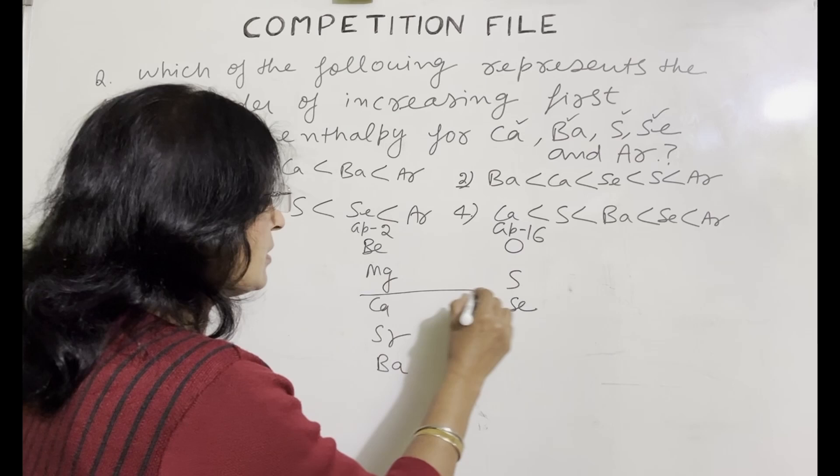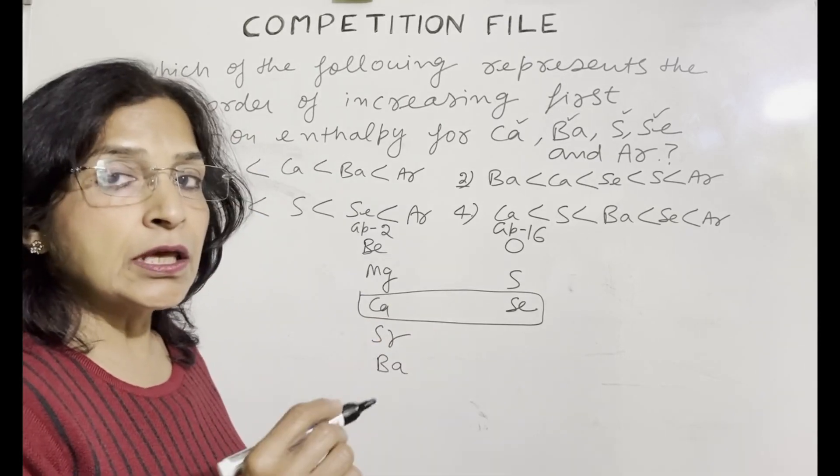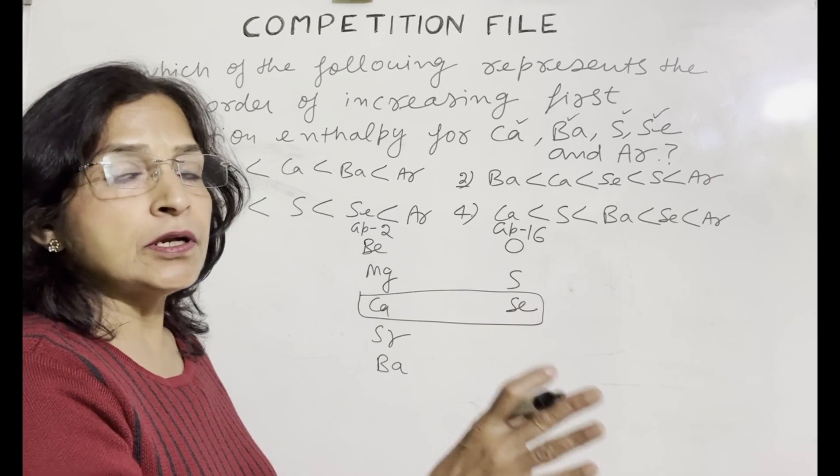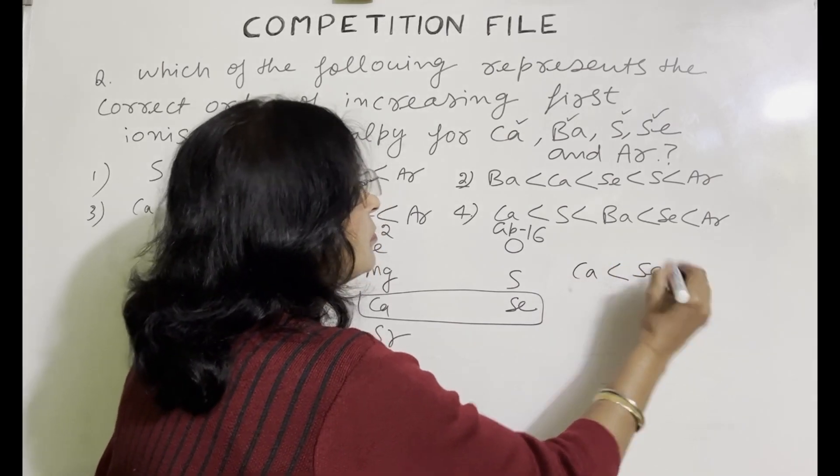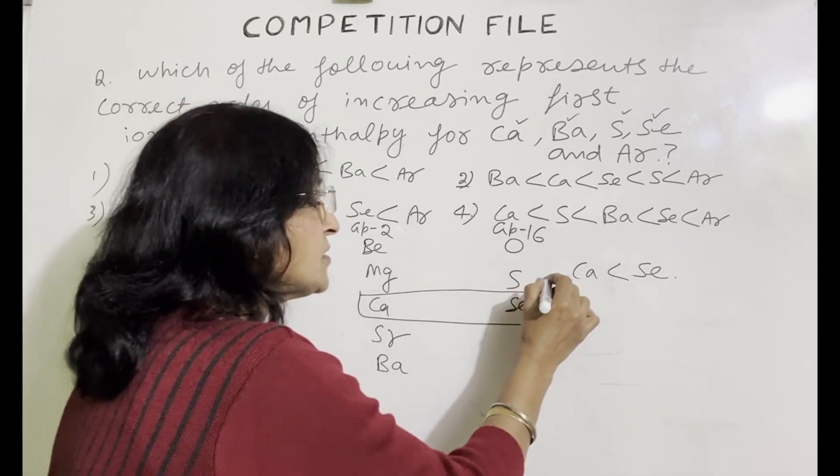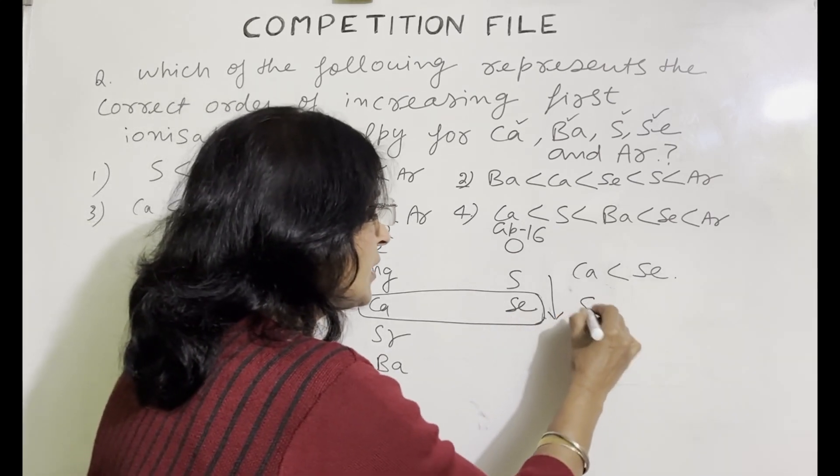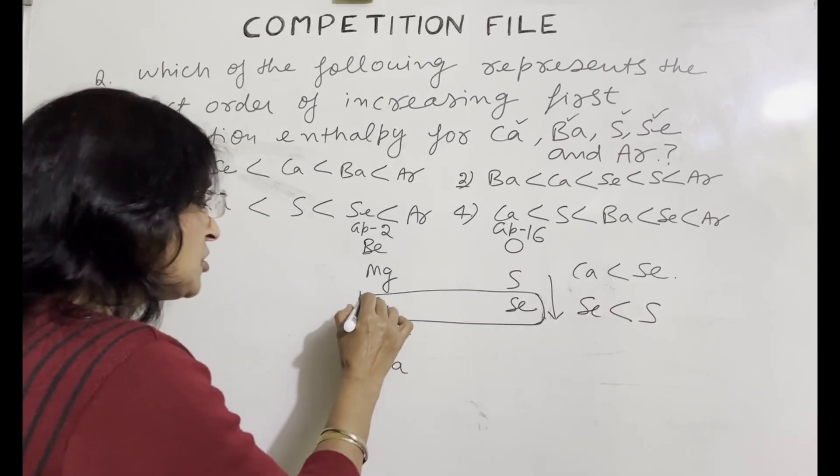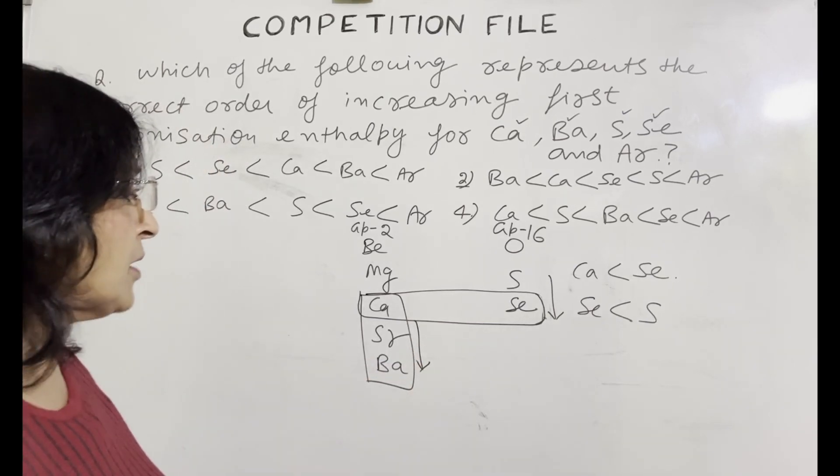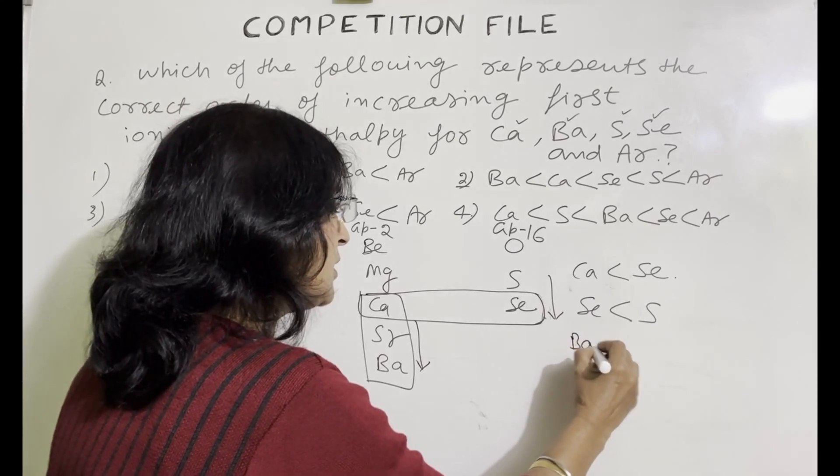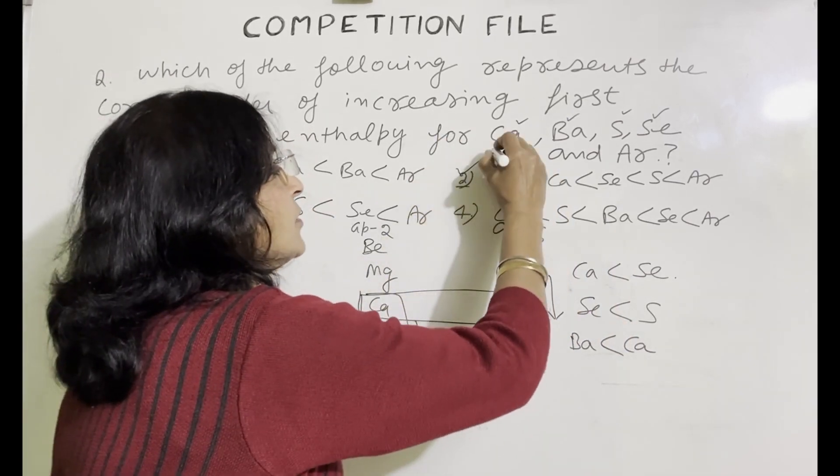Calcium and selenium are in the same period. The ionization enthalpy of selenium will be more than calcium because as we move left to right in a period, ionization enthalpy increases. Sulfur and selenium belongs to the same group. As we move down the group, ionization enthalpy decreases. So the ionization enthalpy of selenium is less than sulfur and calcium and barium belongs to the same group. As we move down the group, ionization enthalpy decreases. So ionization enthalpy of barium is less than calcium. So you have to see which choice fits these three orders. So answer will be 2.